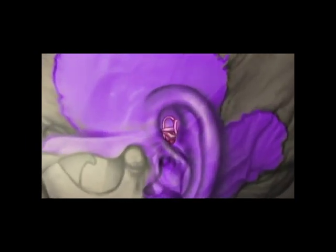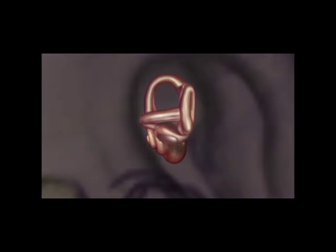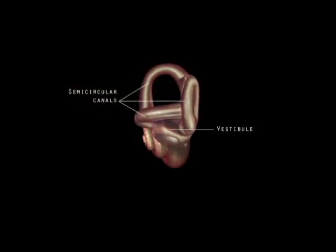The shell-shaped part of the internal ear, the cochlea, lies anteromedial to the semicircular canals and vestibule.